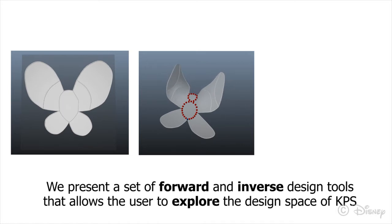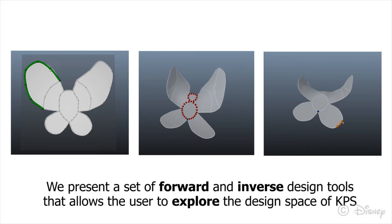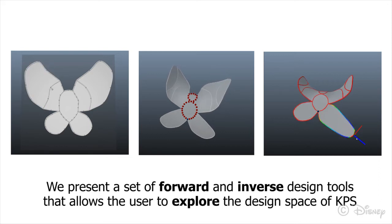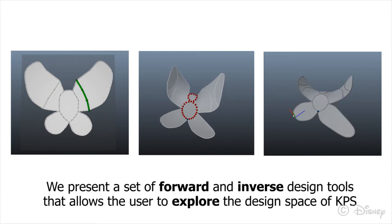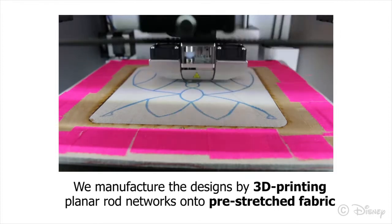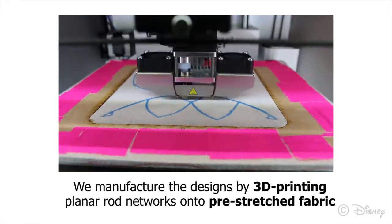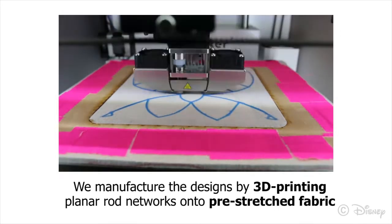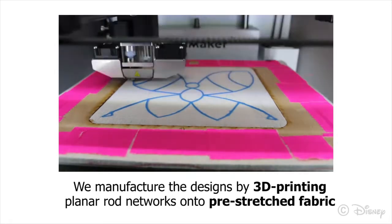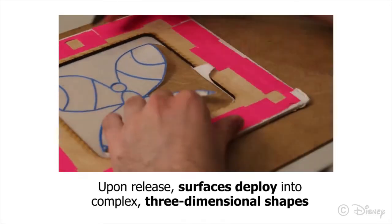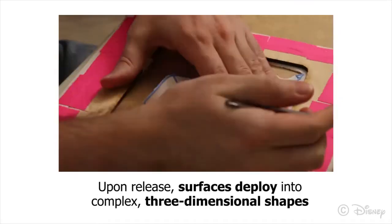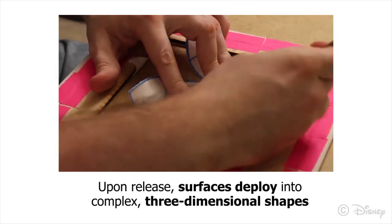To address this challenge, we propose a user-guided but computer-assisted approach that combines forward and inverse design tools in order to enable intuitive exploration of the design space. We manufacture the designs by 3D printing planar rod networks onto pre-stretched fabric. Once cut out, the planar design unfolds into its three-dimensional target shape.